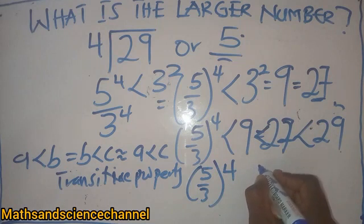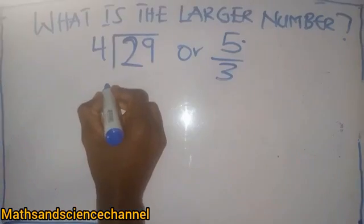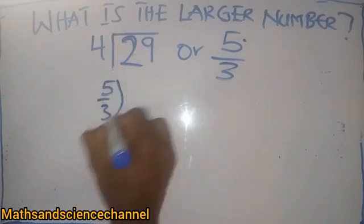should be less than 29 in this case. Now we have 5 over 3 all to the power 4